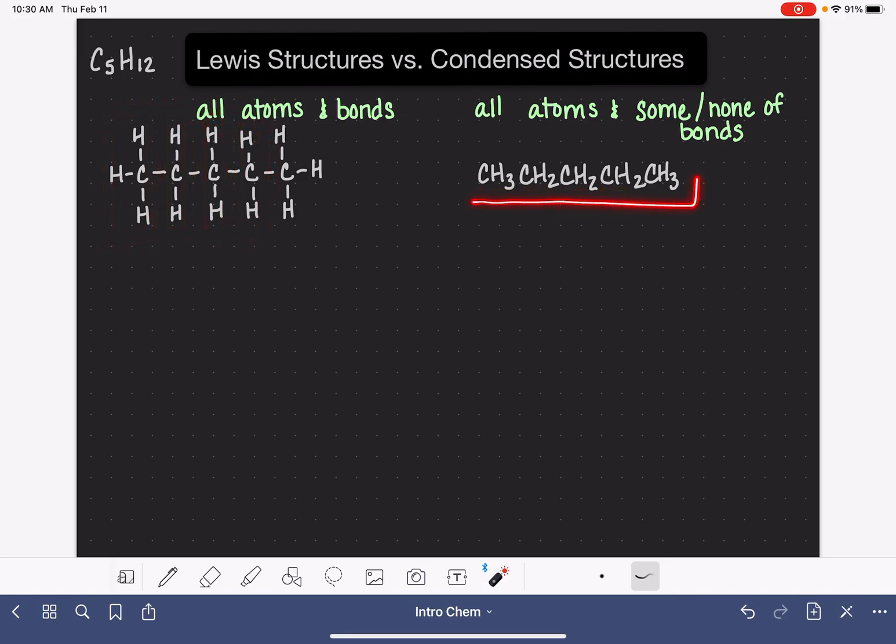A condensed structure is definitely more descriptive than a molecular formula because a molecular formula just tells us five carbons, twelve hydrogens, doesn't tell us anything about how they're arranged. But this condensed structure is communicating that there are five carbon atoms in a row. The first carbon atom has three hydrogens. The next carbon atom has two hydrogens. You get the idea. We don't get that kind of information from a molecular formula.